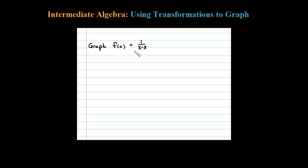Here we want to graph f(x) = 1/(x-3). Let's identify the basic graph. We'll use 1/x as a starting point. Then we can see we have a horizontal translation.